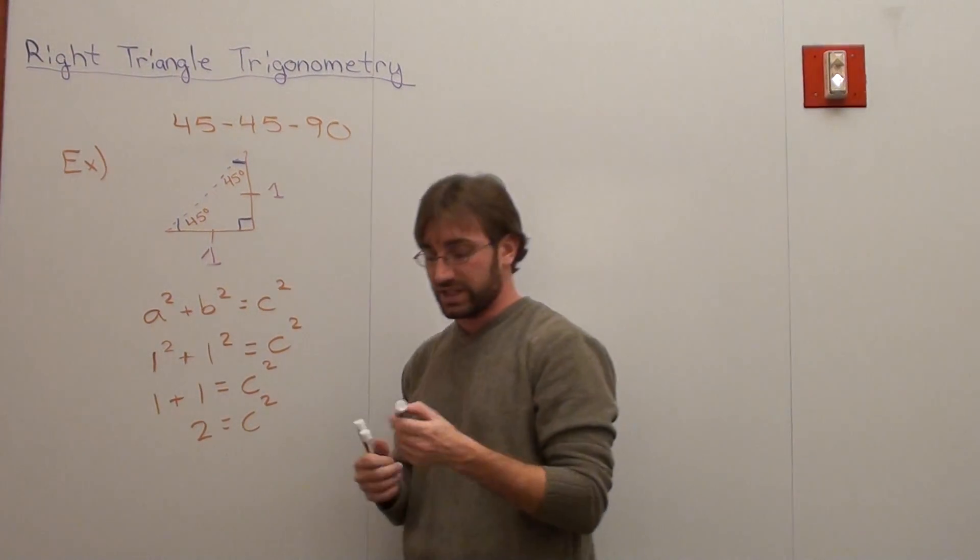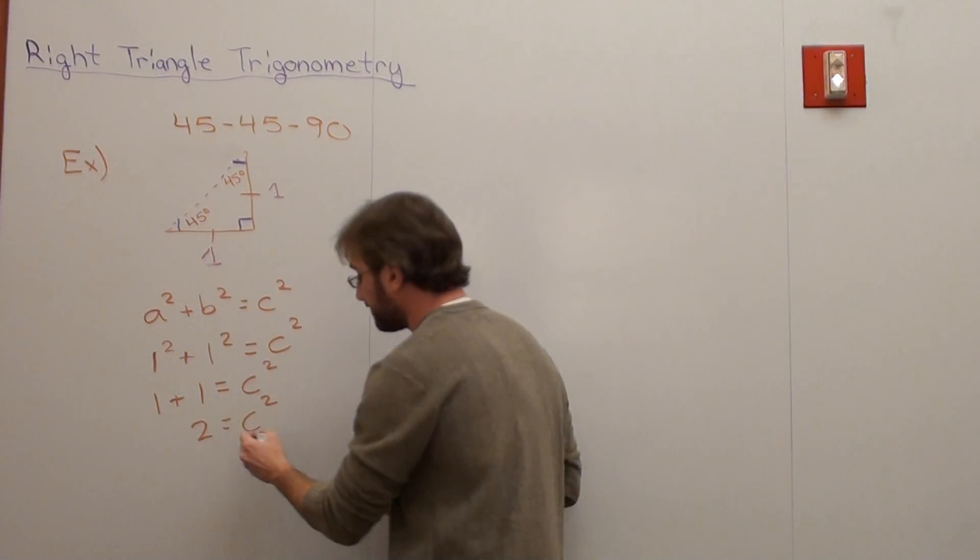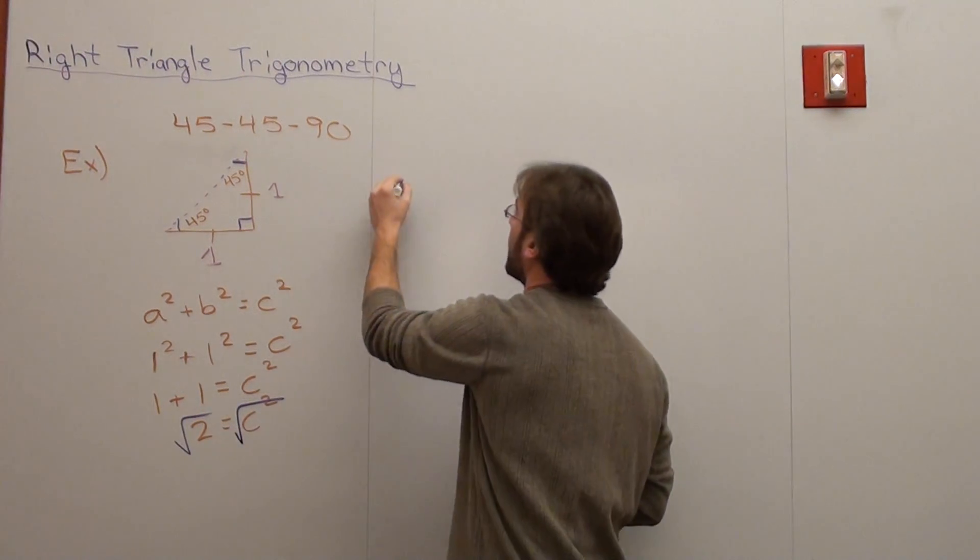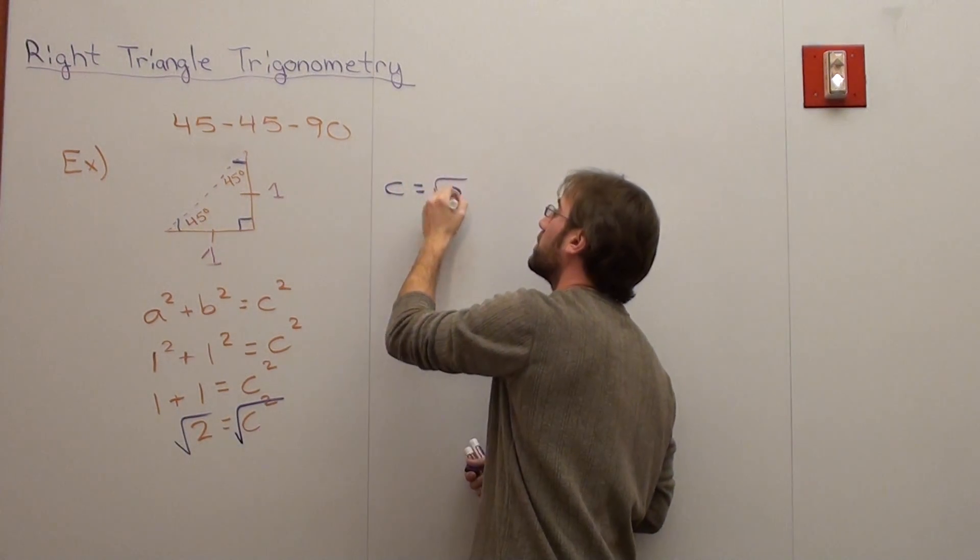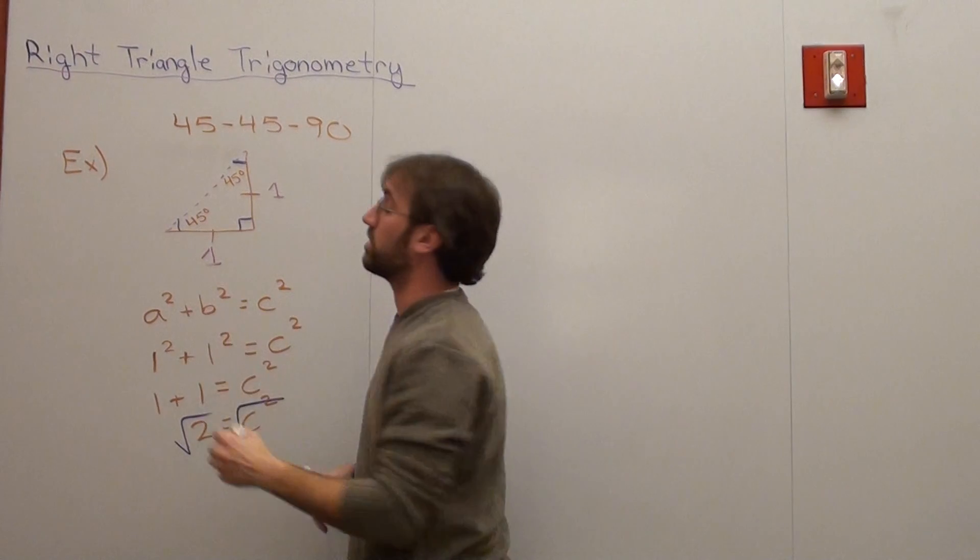Now in order to figure out what c is, I take the square root of both sides and I get c equals square root 2. So this side is equal to the square root of 2.